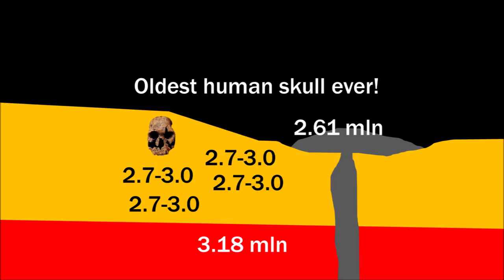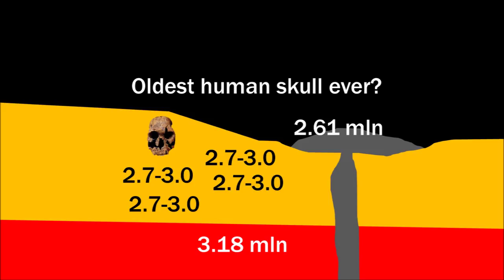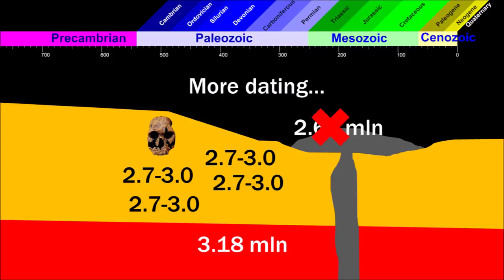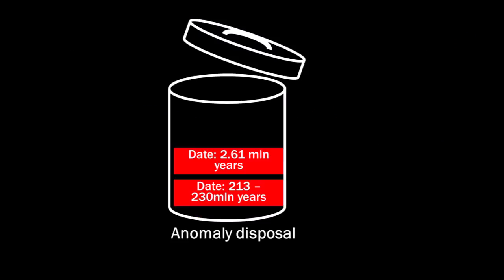The oldest human skull ever, huh? Are you sure? I don't believe that. Some scientists were uncomfortable with that age because it has a significant impact on evolutionary theory. So they decided to date the volcanic ash again, and they found another age. And so rejected the 2.61 million years. So they were right to be skeptical about the other dates as well.